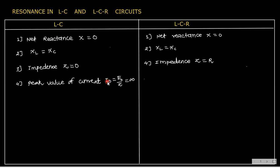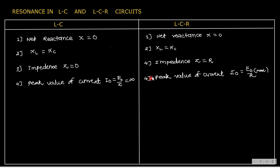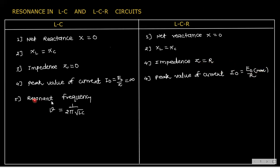Peak value of current I₀ equals E₀ divided by impedance. In LC, impedance is zero, so E₀/0 becomes infinity — that's why in LC oscillation peak current is infinite. Whereas in LCR, peak current I₀ equals E₀/R, since Z equals R, and that is the maximum current.